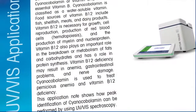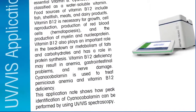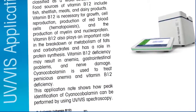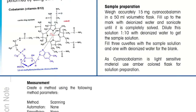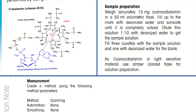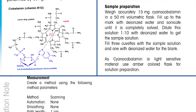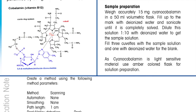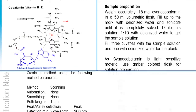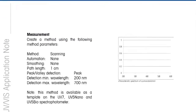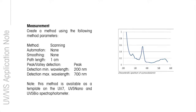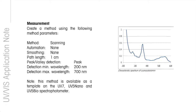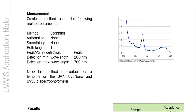As an example, we show here the application method for cyanocobalamin identification according to the U.S. Pharmacopeia. This is a typical method for identification of raw materials commonly applied in the pharmaceutical industry.